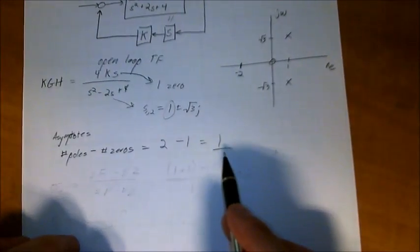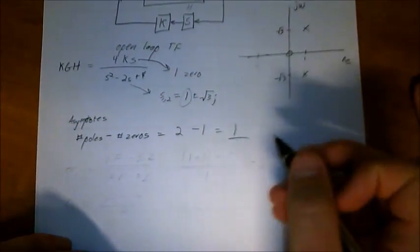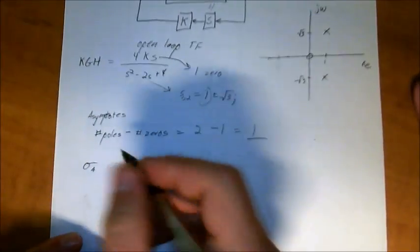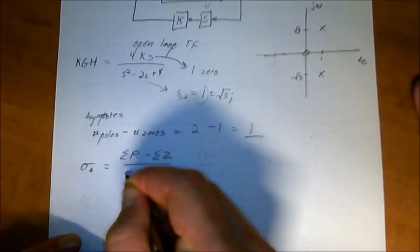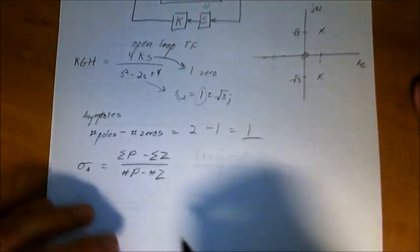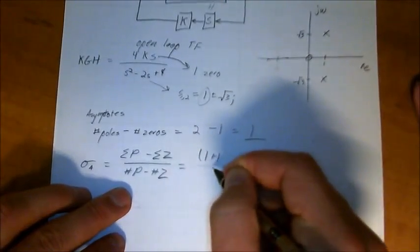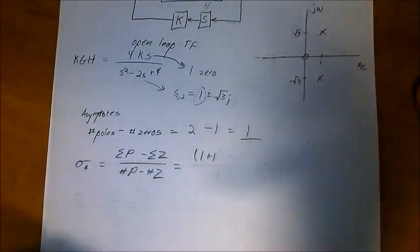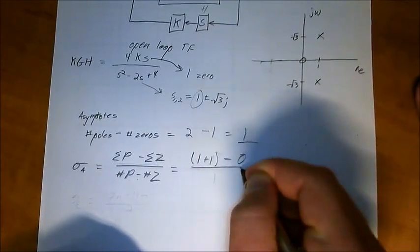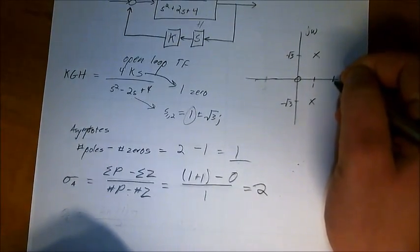Now that we've found the number of asymptotes, we need to find out exactly where those asymptotes are on our plot. The way you do that is you use sigma asymptotes — this is the location of the asymptote — equal to the sum of the poles minus the sum of the zeros, all over the number of poles minus the number of zeros. In this case, this is going to equal 1 plus 1 minus 0, all over 1, so this is going to be equal to 2. So we have our asymptotes starting here at 2.